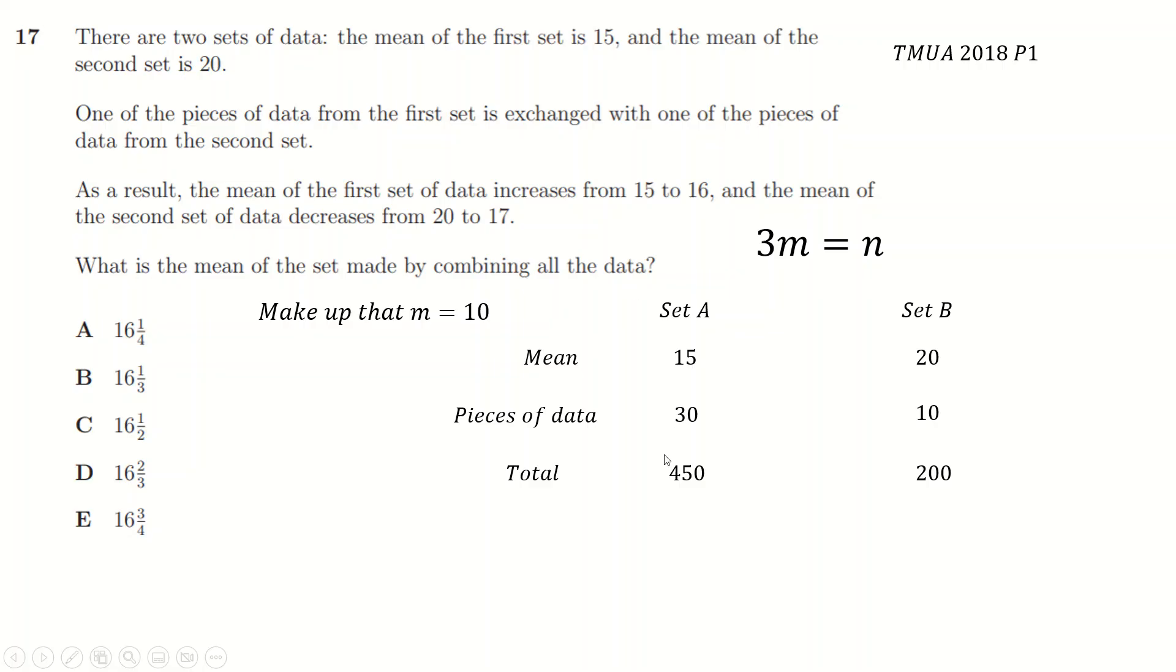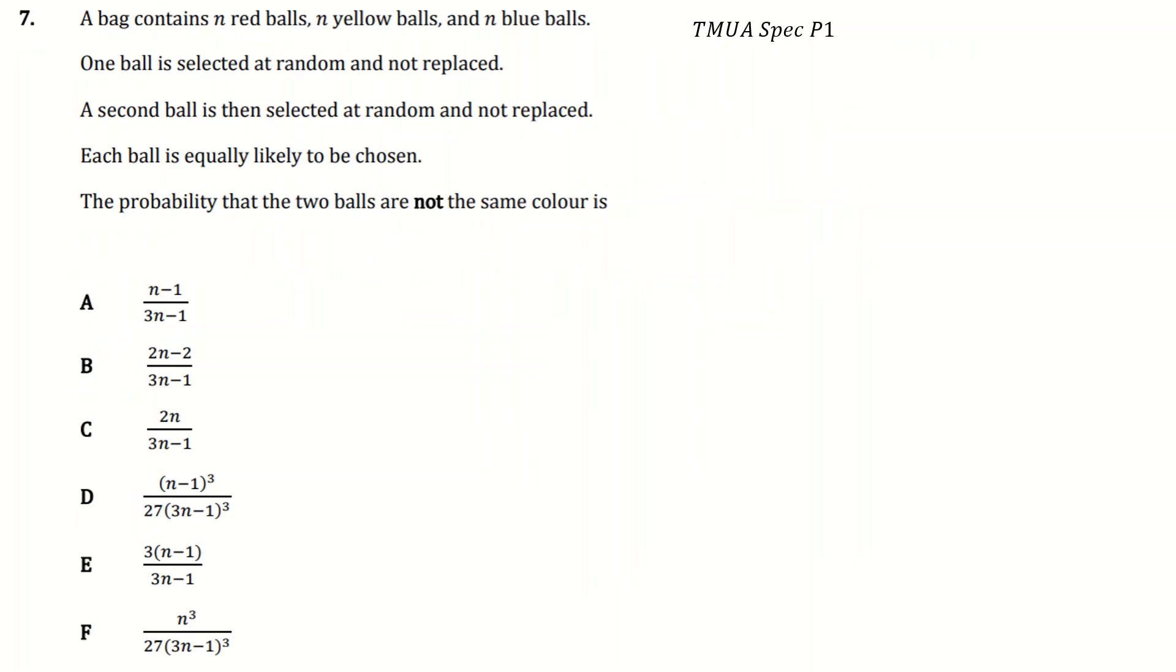And so now our total piece, so the mean of combining all the data is going to be the total amount, which is going to be 650, divided by the total number of data points, which is 40. And if you just simplify that up, you're going to get 65 over 4, which is this one here. So that one was quite hard, but just using all the stuff, making up data and using total of means is a good strategy there.